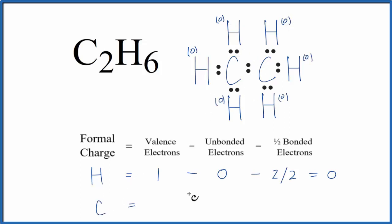For the carbon, carbon's in group 14, sometimes called 4A, four valence electrons. Unbonded, again, all of these electrons are involved with bonds with the hydrogen. So we don't have any unbonded valence electrons.